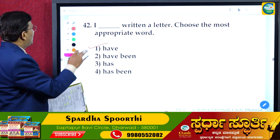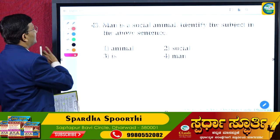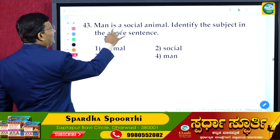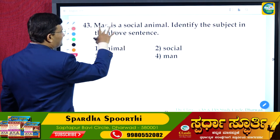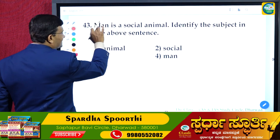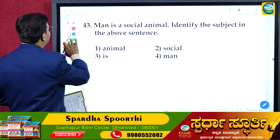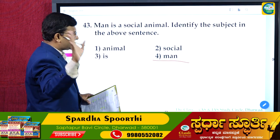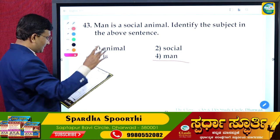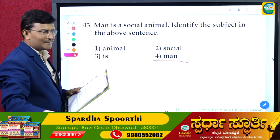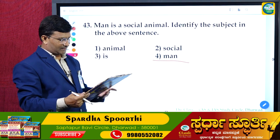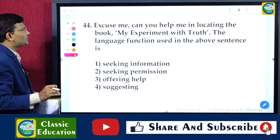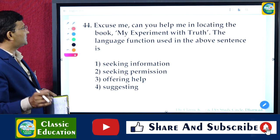Question 43: 'Man is a social animal.' Identify the subject in the above sentence. The subject is the doer of the action, placed at the beginning of the sentence. Here 'man' is the subject and 'a social animal' is the object. The answer for question 43 is 'man.'